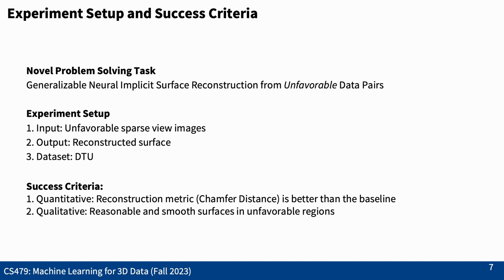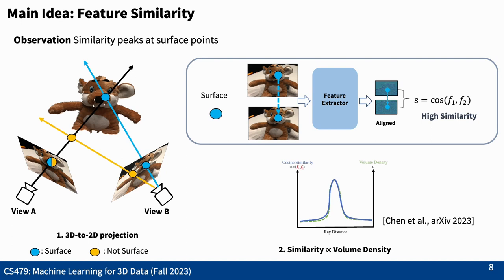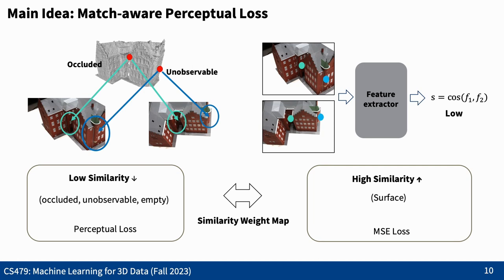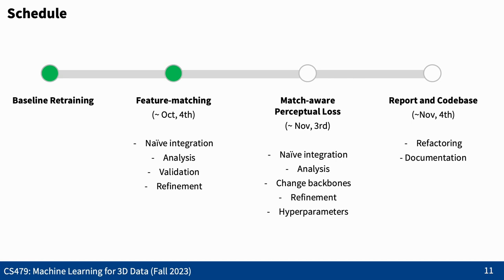To address unfavorable pairs, we explicitly leverage feature similarity within the 2D domain to provide a robust geometric prior. If we project a point into two different views, their feature similarity will be high if they correspond correctly, and low otherwise—the similarity score works like volume density. To alleviate multi-view inconsistency in occluded or unobservable regions, we utilize perceptual loss exploiting prior knowledge from ImageNet pre-trained models. To avoid oversmoothed surfaces, we introduce a match-aware perceptual loss derived from the similarity map, a weighted sum of perceptual loss and MSE loss. We will implement this loss function and finalize our report. Thank you for listening.